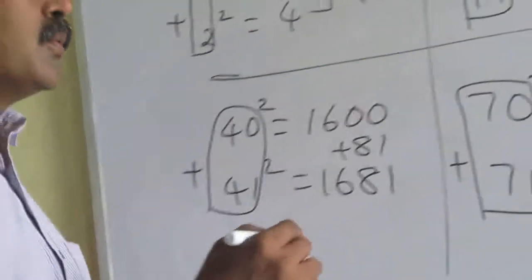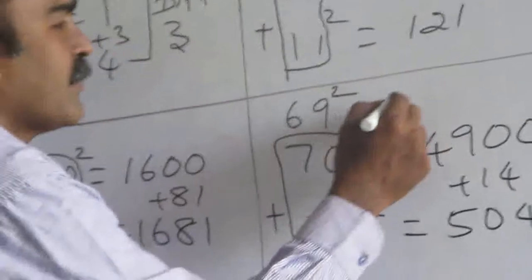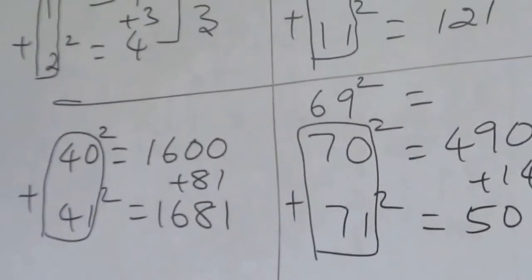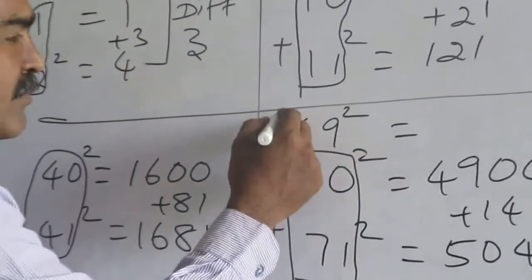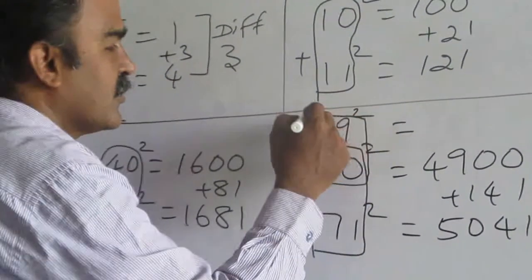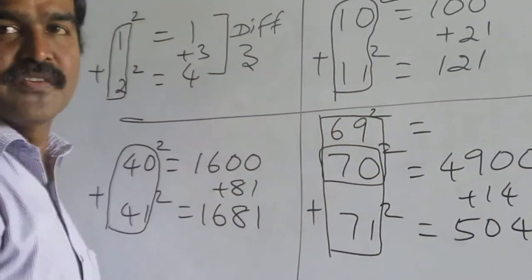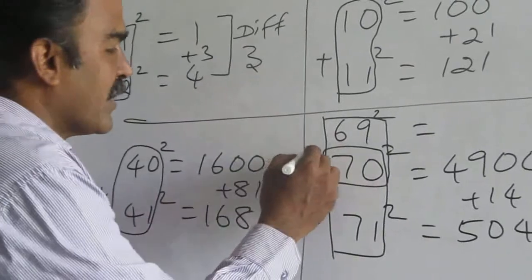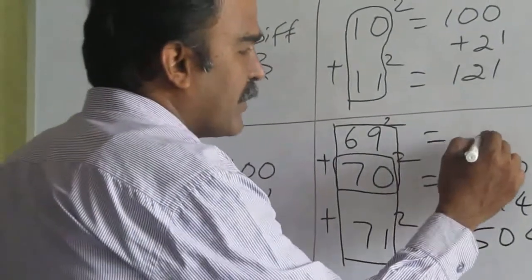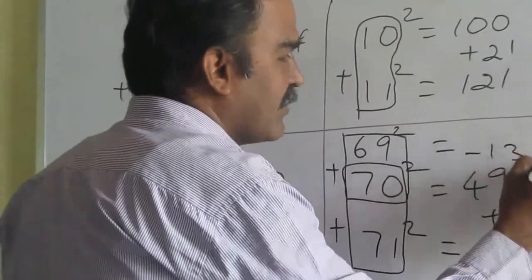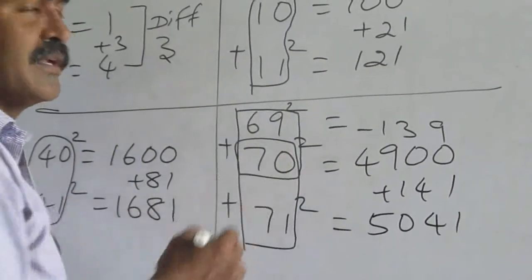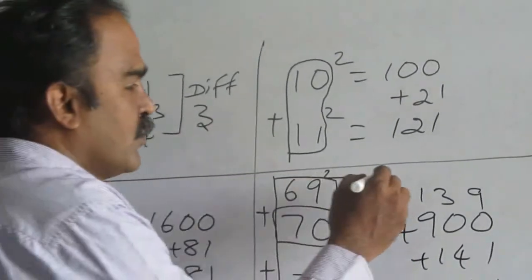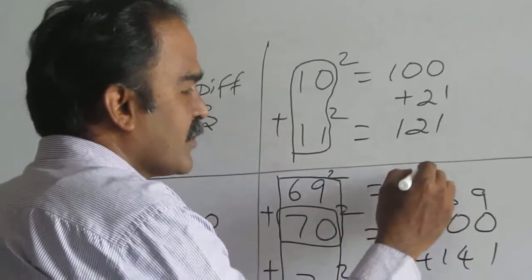Now, we have a doubt. How to find one more number — 69 square? What you have to understand is, if the number is the next number, you have to add up. If the number is the previous number, just you have to subtract it. What is 70 plus 69? 139. Just you subtract 139 from this. 4900 minus 139. So, what is your answer? 4761.